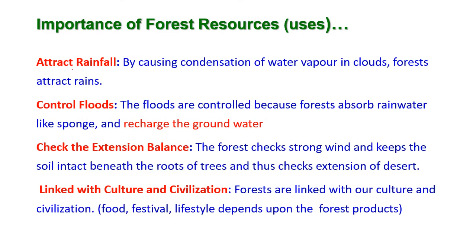Attraction of rainfall: by the process of causing condensation of water vapor in clouds, forests attract rainfall. Controlling of floods: floods are controlled because forests absorb rainwater like mega sponges, and moreover they recharge the groundwater. Whenever needed, we can get the water back from underground resources — keeping the water source under the ground.